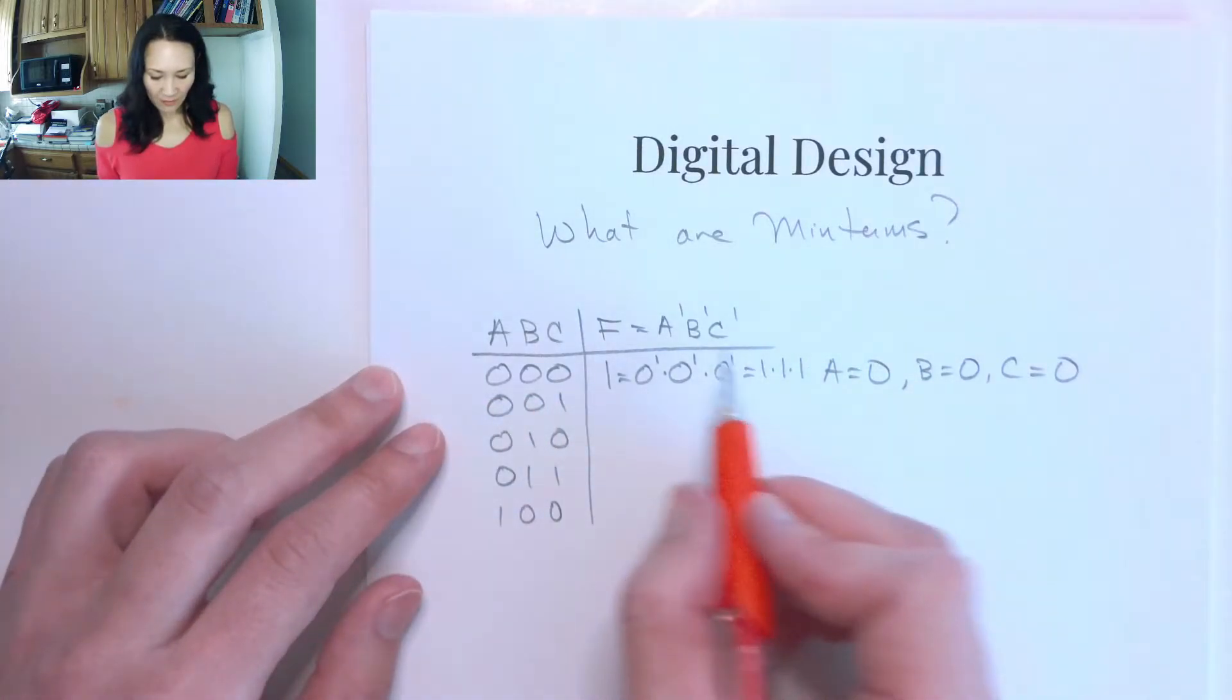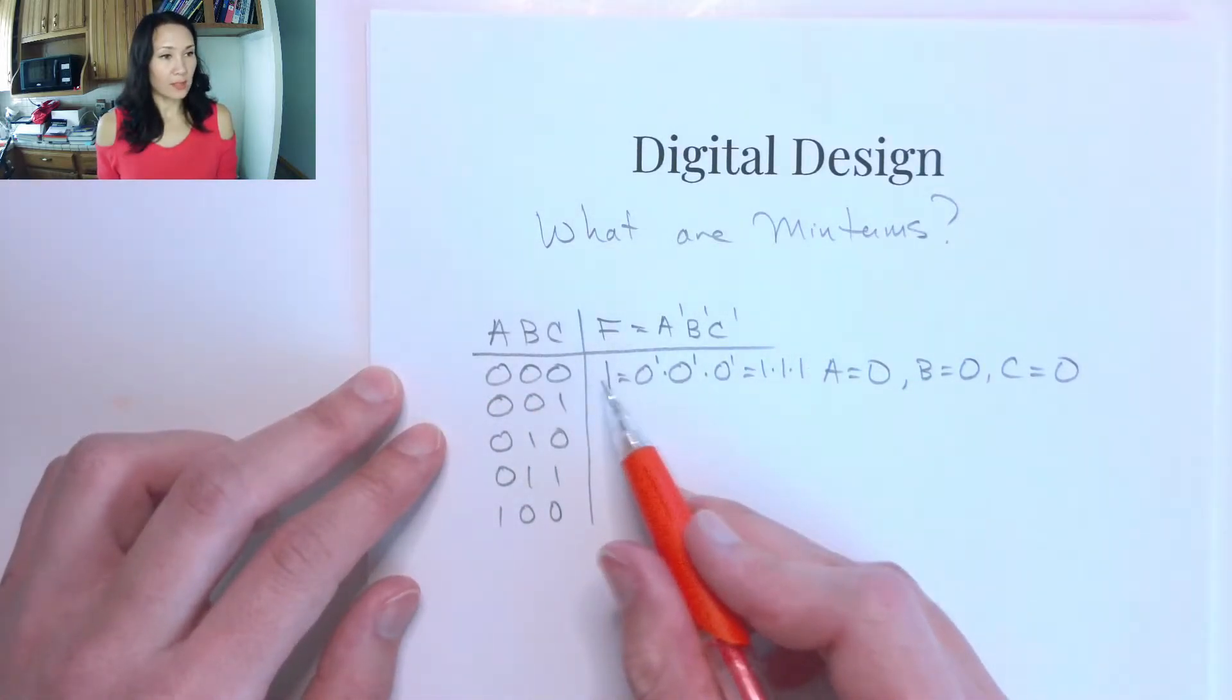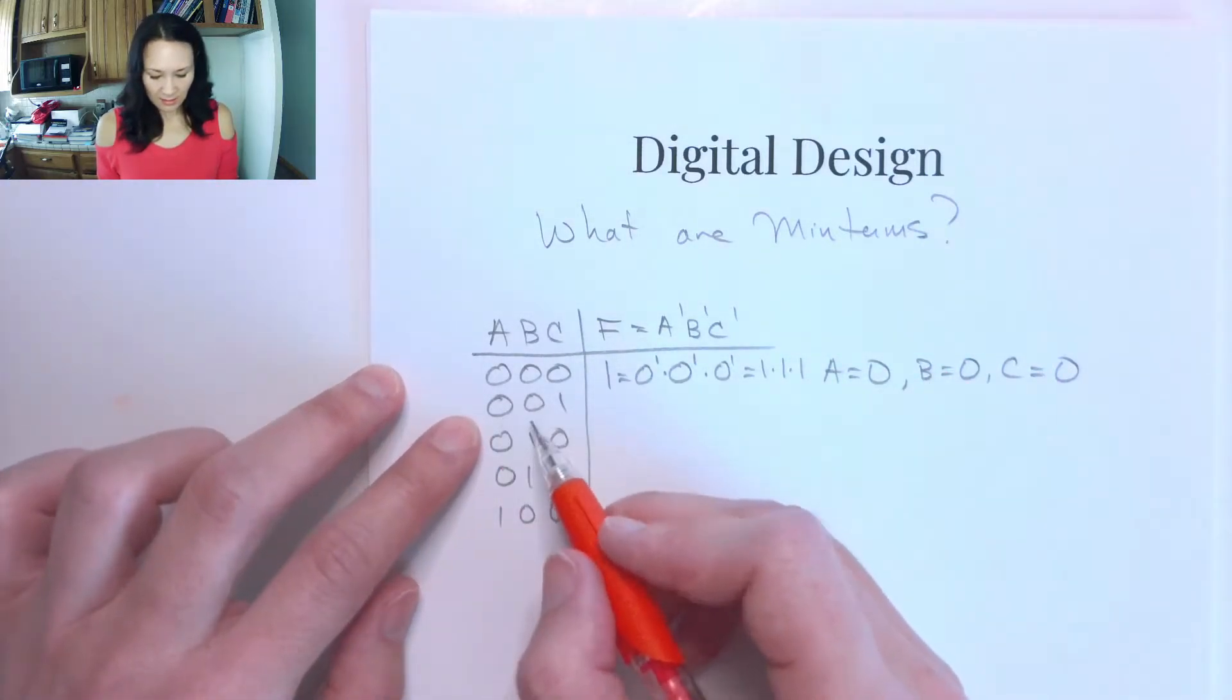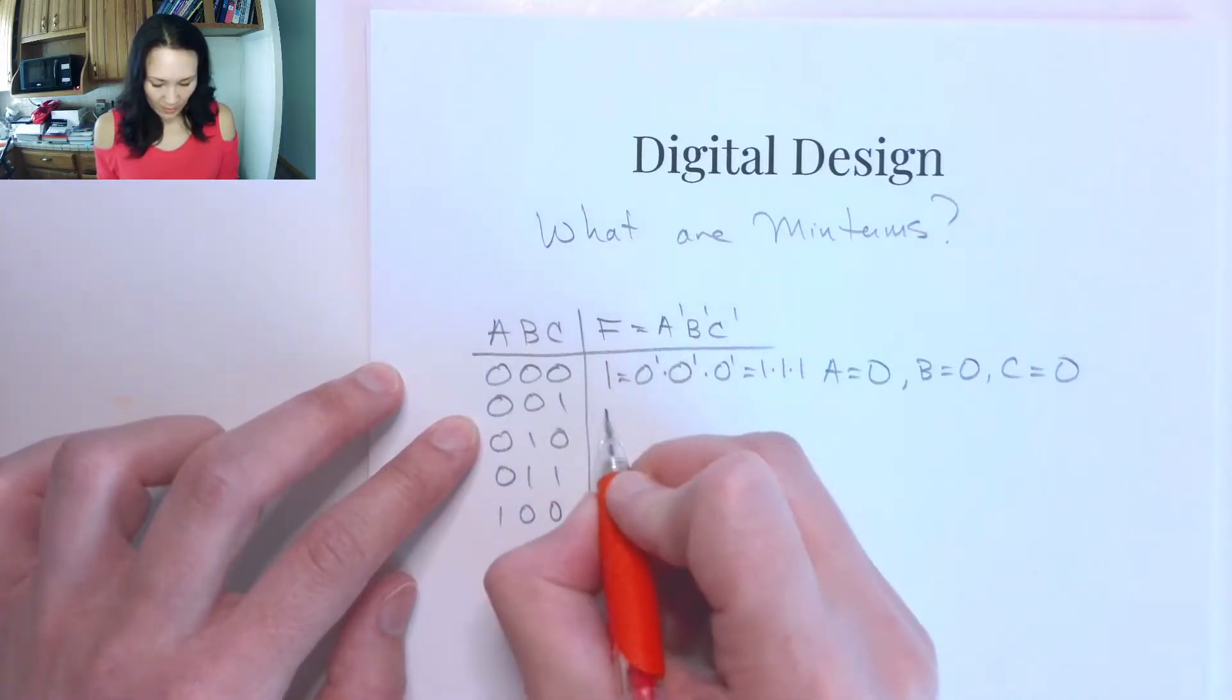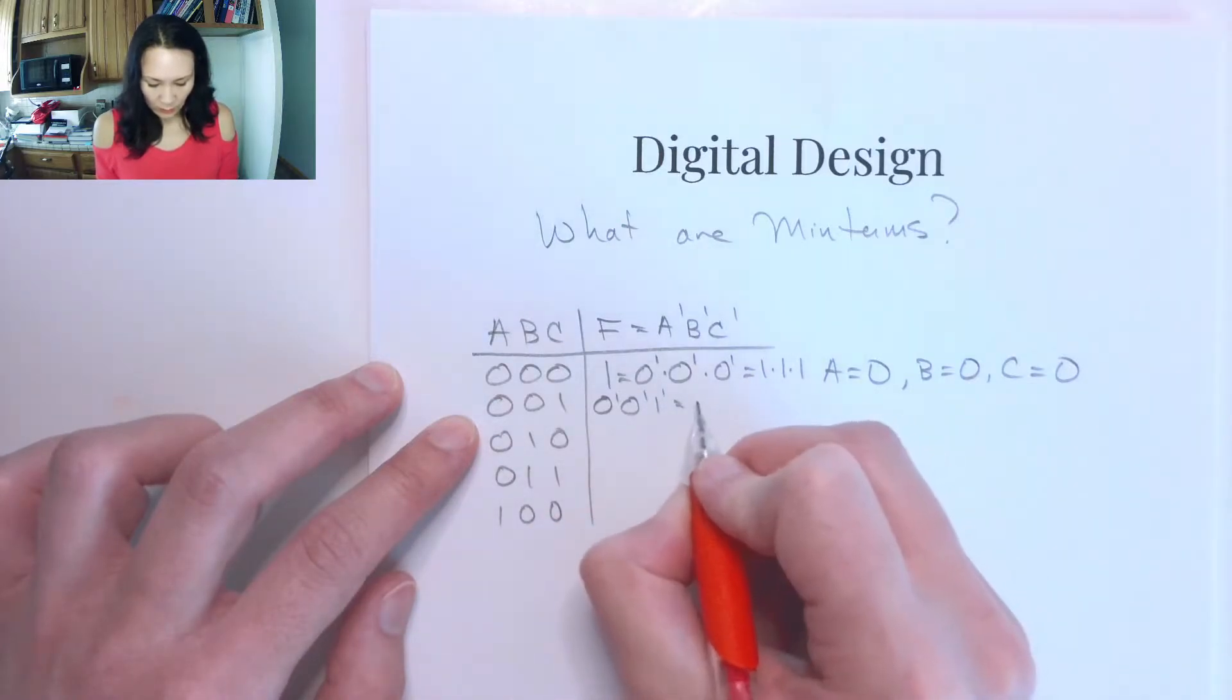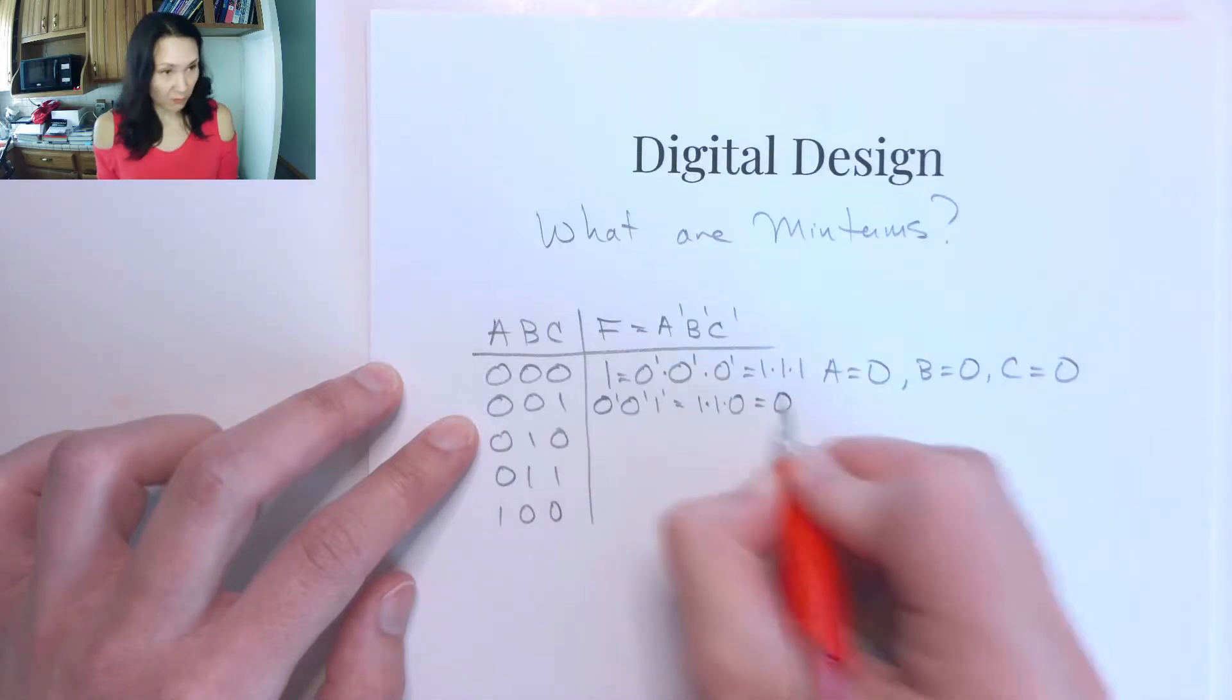Now, this is only going to be true for this first case when inputs are 0, 0, 0. Because if I plug in these inputs 0, 0, 1, this would be 0 naught, 0 naught, 1 naught, which evaluates to 1 and 1 and 0, which will give me a 0.